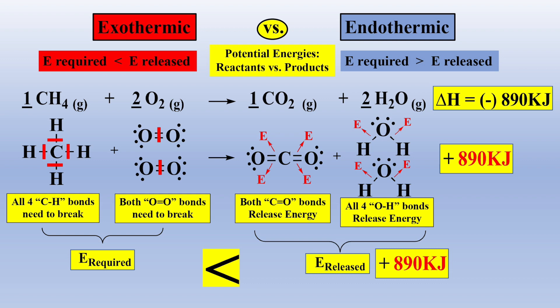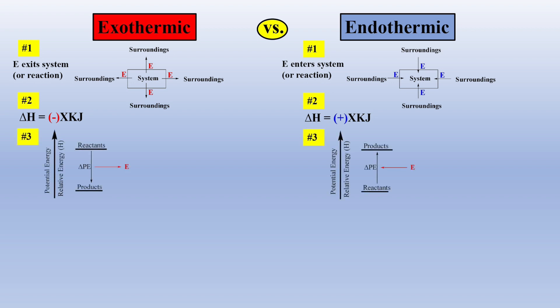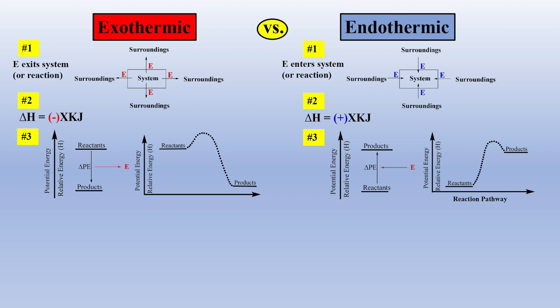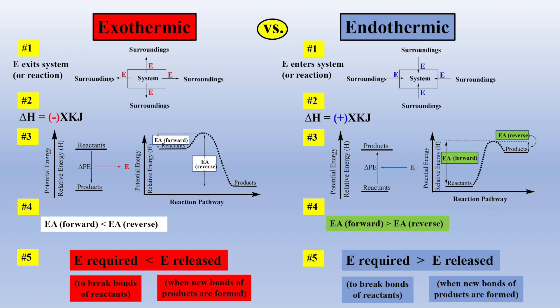Conversely, for an endothermic reaction, the reverse is true: the amount of energy to break bonds of reactants is greater than the amount of energy released as the new bonds of products are formed. In summary, energy either exits the system or is absorbed from the surroundings; the sign of delta H is either negative or positive; the relative energy of reactants is either higher or lower when compared to products; either the energy of activation barrier for the forward reaction is less or greater than the energy of activation barrier for the reverse reaction; and the amount of energy required to break bonds of reactants is less or more than the amount of energy released as the bonds of products are formed. We now have several helpful ways for thinking about exothermic and endothermic reactions.